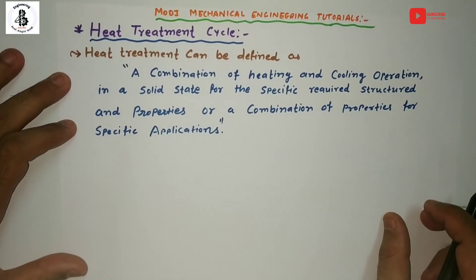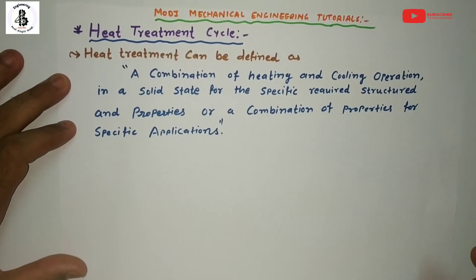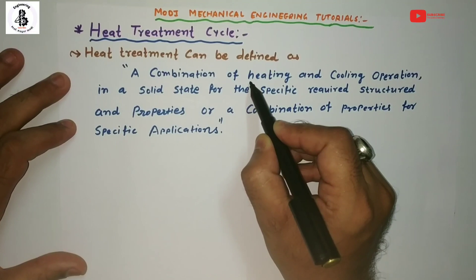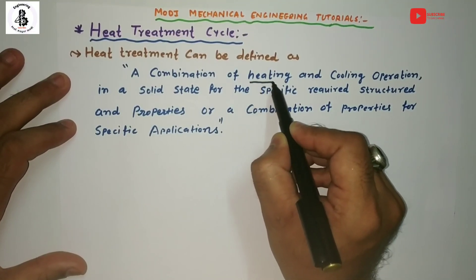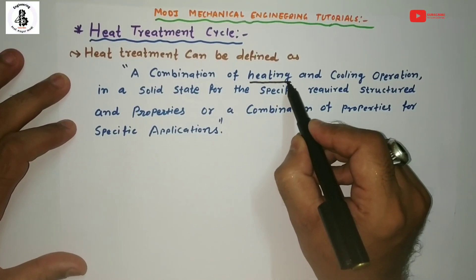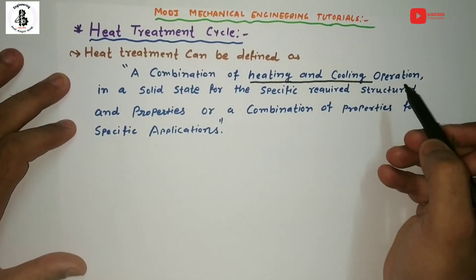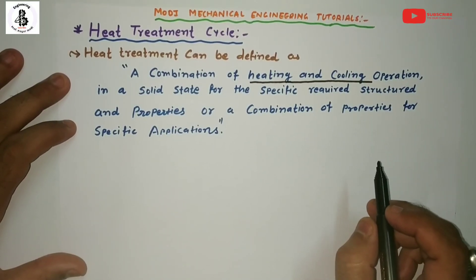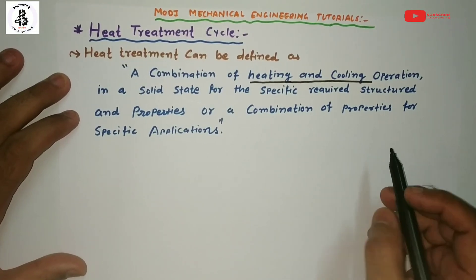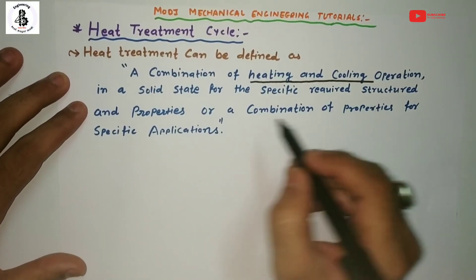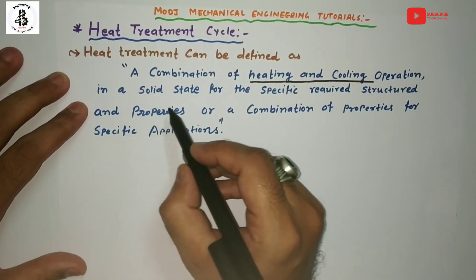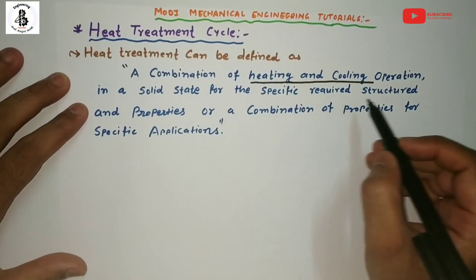The heat treatment process can be defined as a combination of heating and cooling operations. Into the heat treatment process, both heating and cooling are important. The temperature to which you heat and the cooling rate you maintain are key to enhancing the mechanical properties of the steel structure. It is a combination of heating and cooling operations in the solid state for a specific required structure.